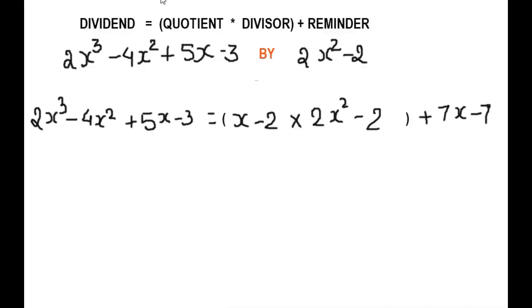Here is the value — put it into the formula. 2x cubed minus 4x squared plus 5x minus 3 is equal to, inside the bracket, x minus 2 into 2x squared minus 2, bracket close, plus the remainder. This is our quotient, this is our divisor, and this is our remainder. Now we will multiply this.